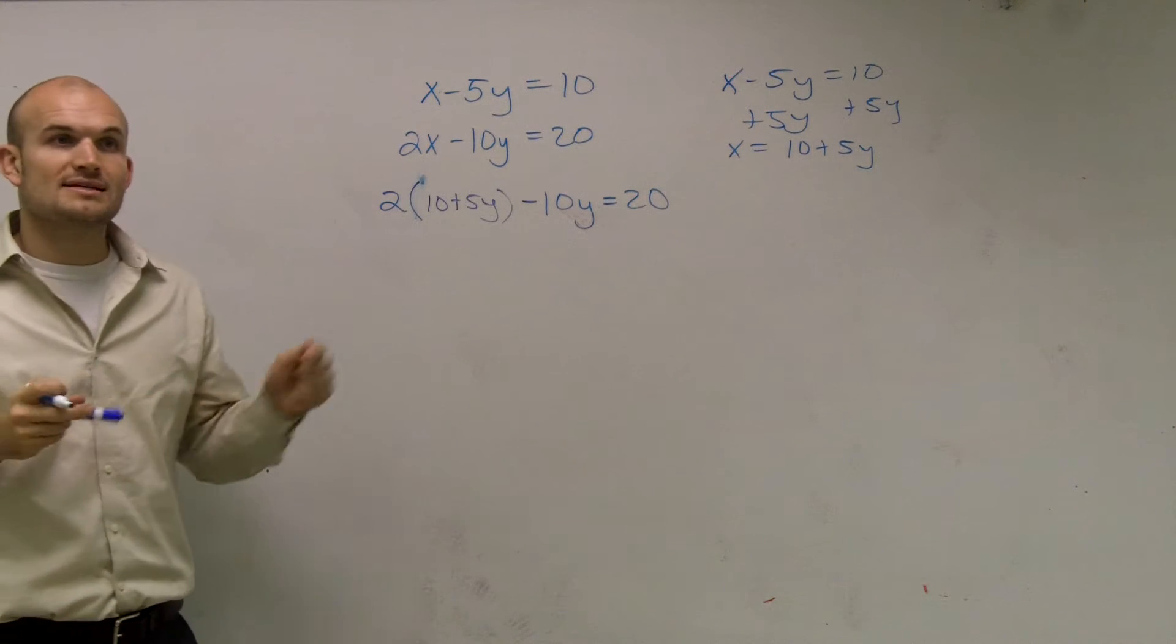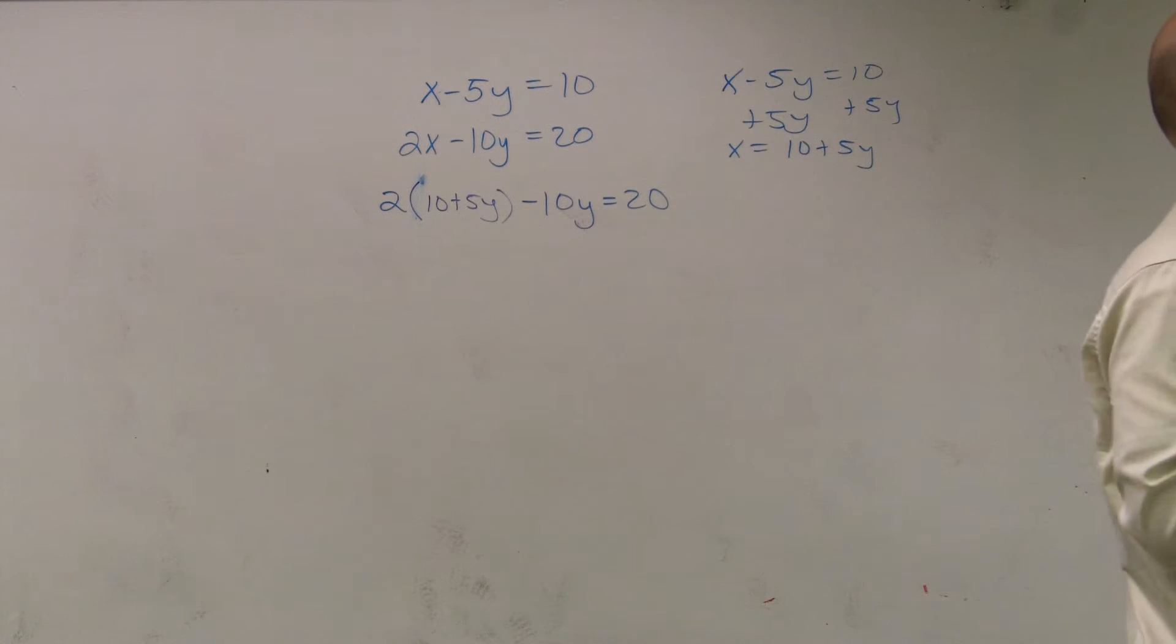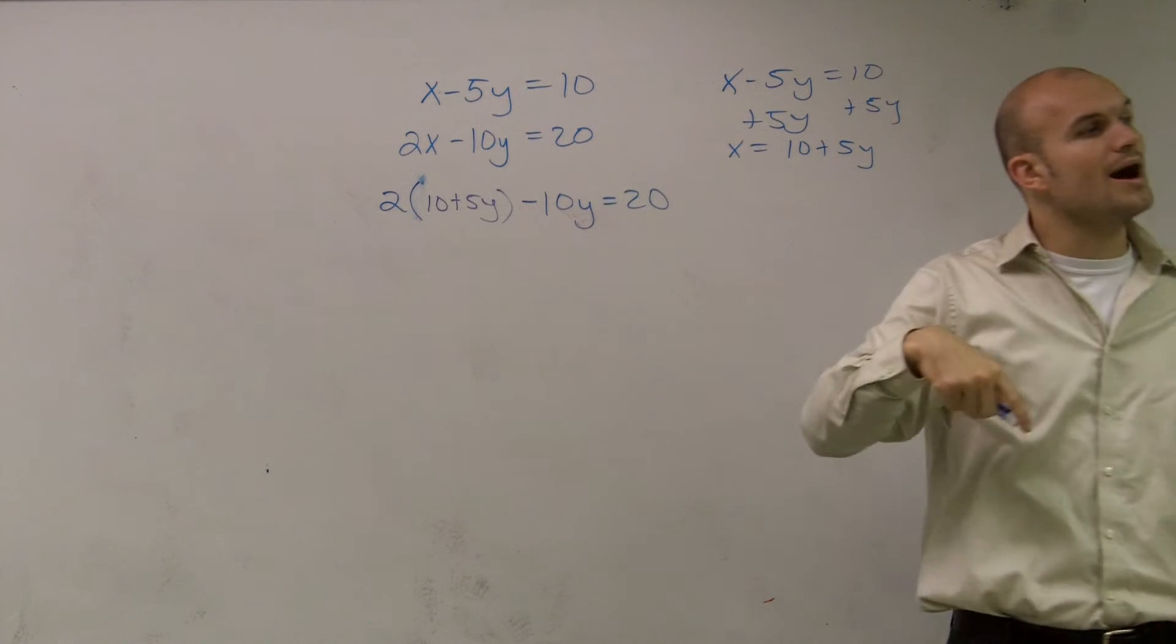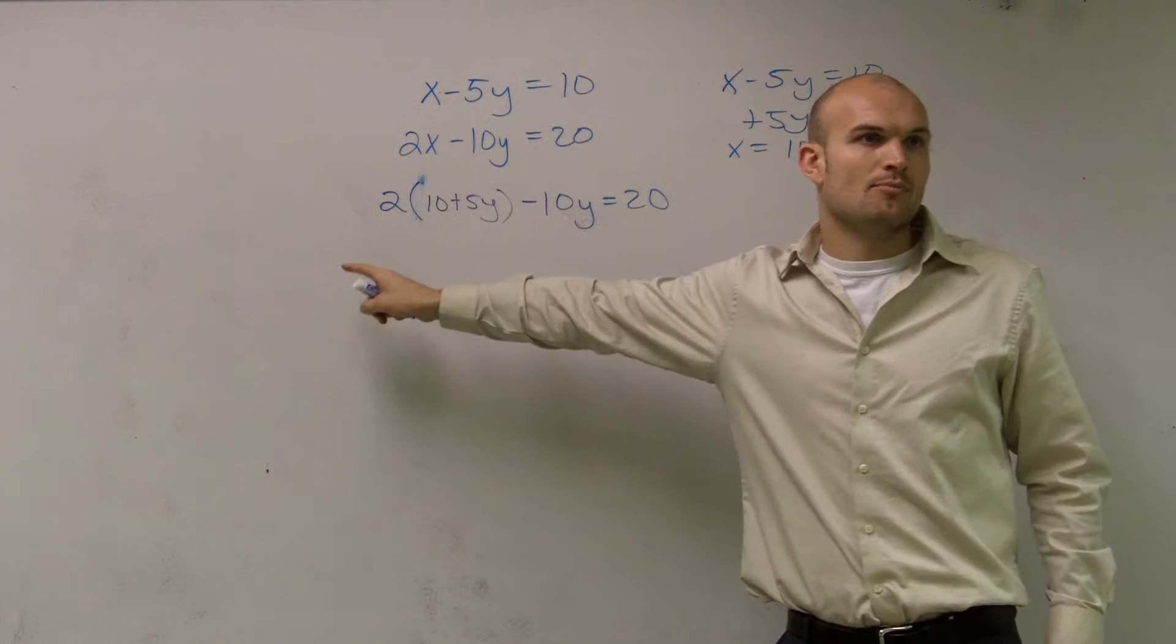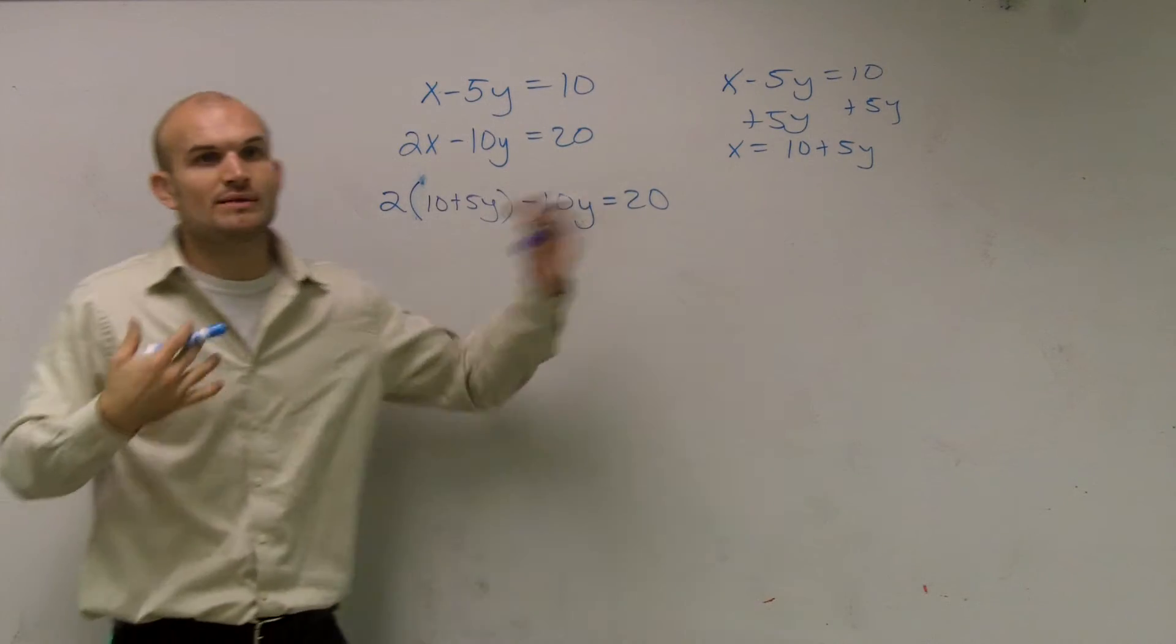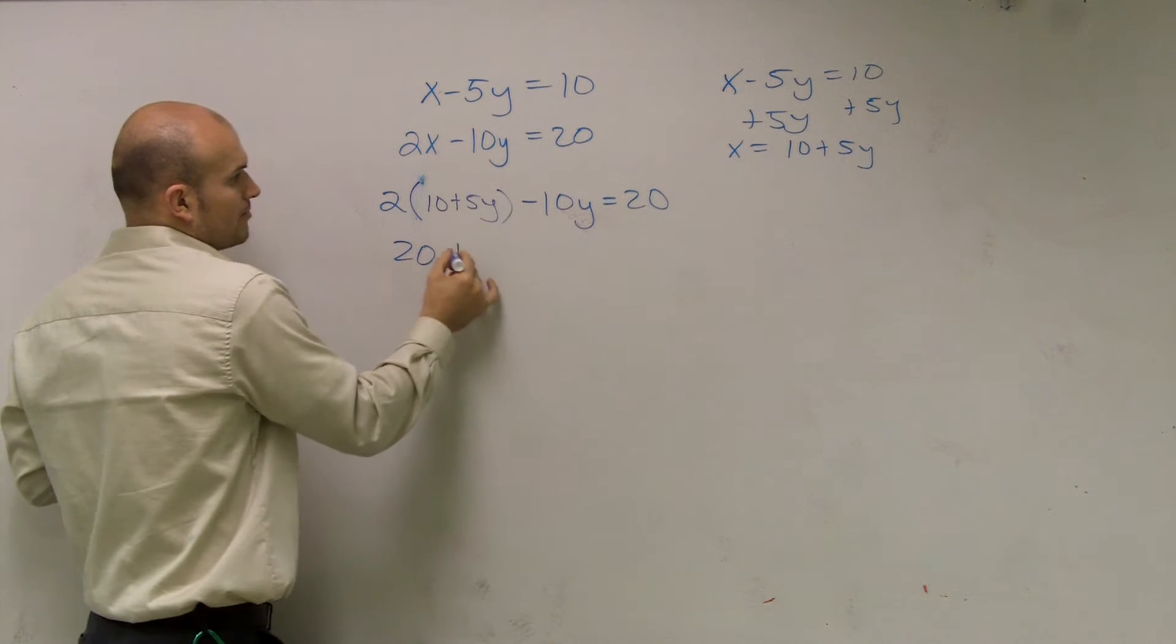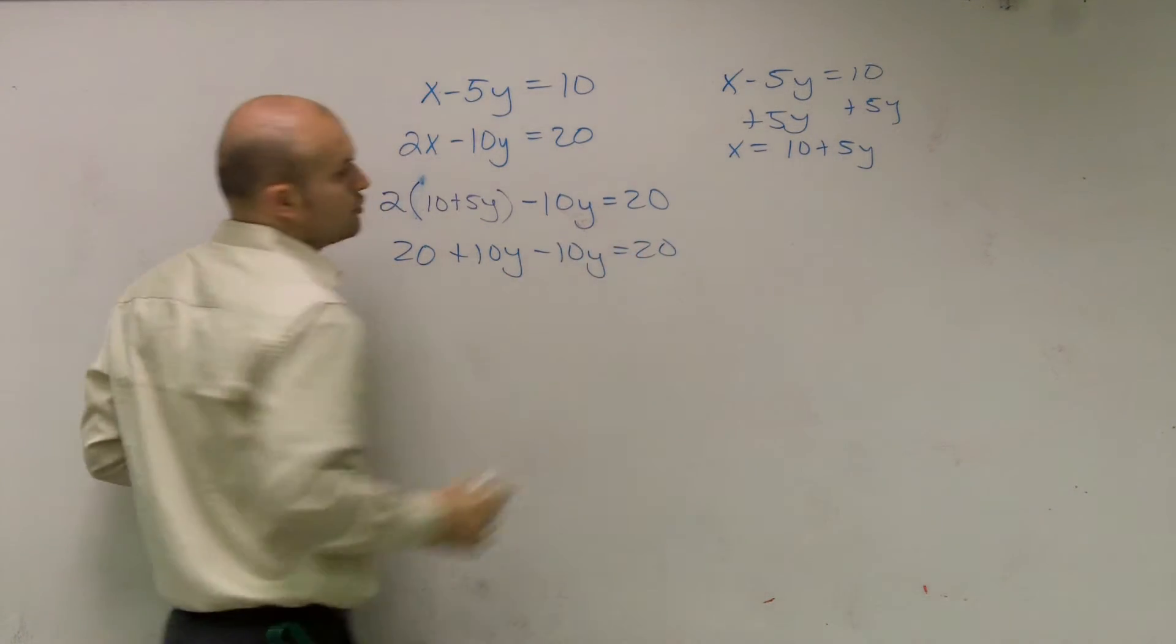Now, since I have a number, and remember guys, when you're doing substitution—Justin, you write this down?—when you're doing substitution, you've got to make sure you put parentheses around your number that you substitute in. The reason why is because, ladies and gentlemen, when there's multiplication, remember when we have a number multiplied by parentheses, we have to use distributive property. So, it's really important that when you guys are showing me that you're doing substitution, that you put it around parentheses. So, therefore, I'm going to get 20 plus 10y minus 10y equals 20.